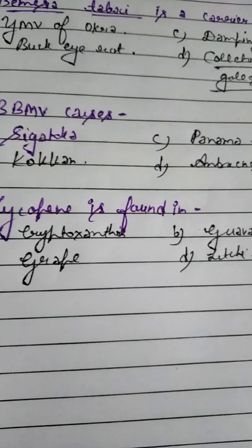Student, question number 10. Lycopene is found in — Option A: Cryptoxanthin, Option B: Guava, Option C: Grape, Option D: Lychee. Please remember: Lycopene is also found in Guava.